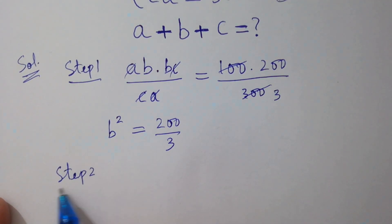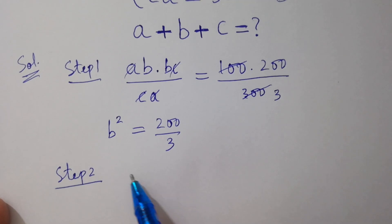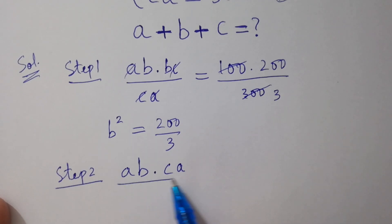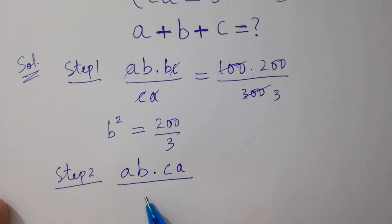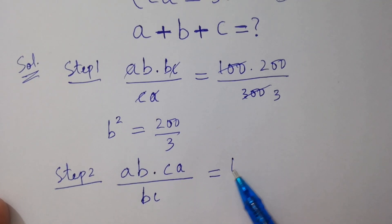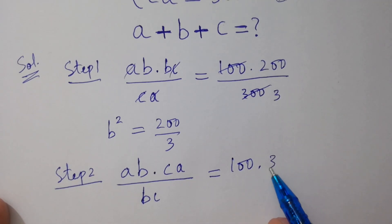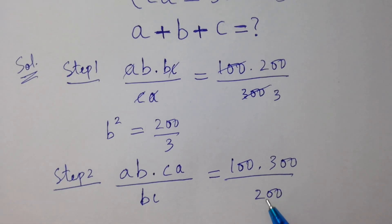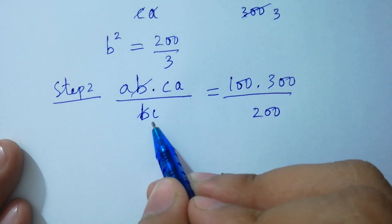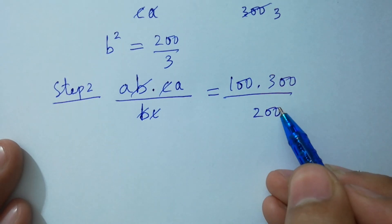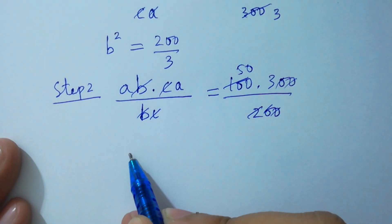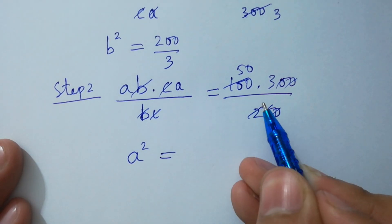Step 2: multiply the first equation by the third equation, then divide by the second equation: (ab × ca) / bc = (100 × 300) / 200. Here b and b will be cancelled, c and c will be cancelled. We get a² = 50 × 3 = 150.